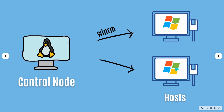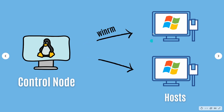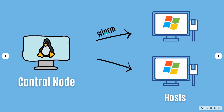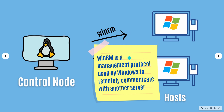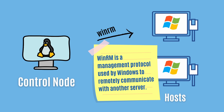Here you can see the control node is Ubuntu — I'm going to show that in the demo — and on the right side you have Windows servers. For illustration I put two but you can have as many as you want. In the Linux case, communication from a Linux server to another Linux server happens over SSH, but in the Windows case it uses WinRM. WinRM is a management protocol used by Windows to remotely communicate with another server, and the expectation is that the control node can communicate to the Windows host on its WinRM port.